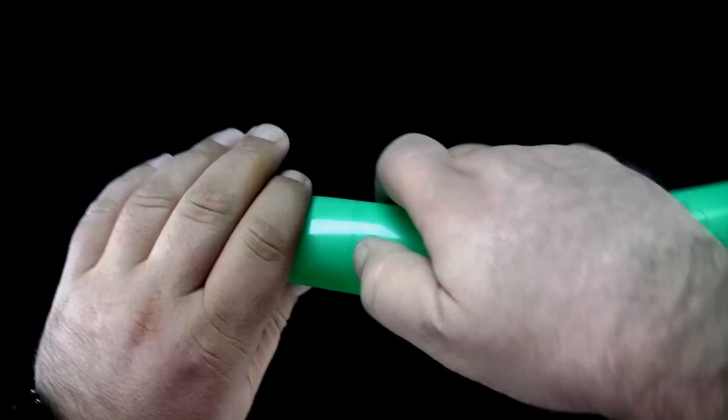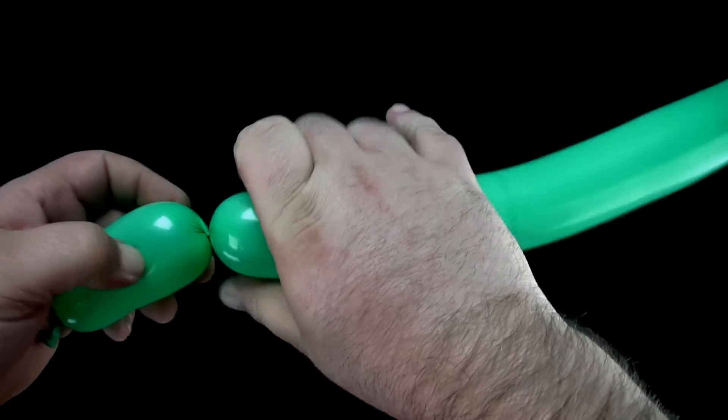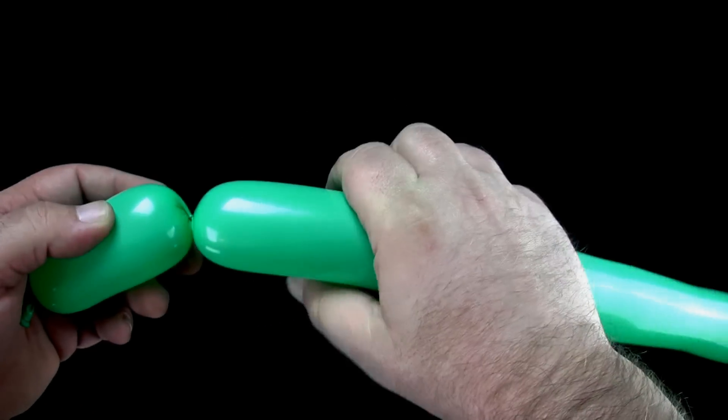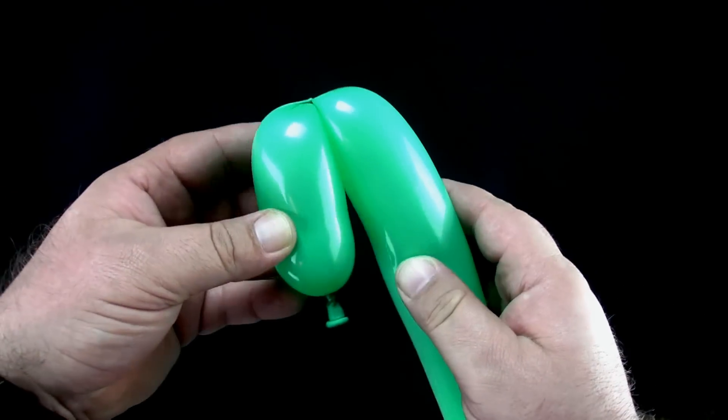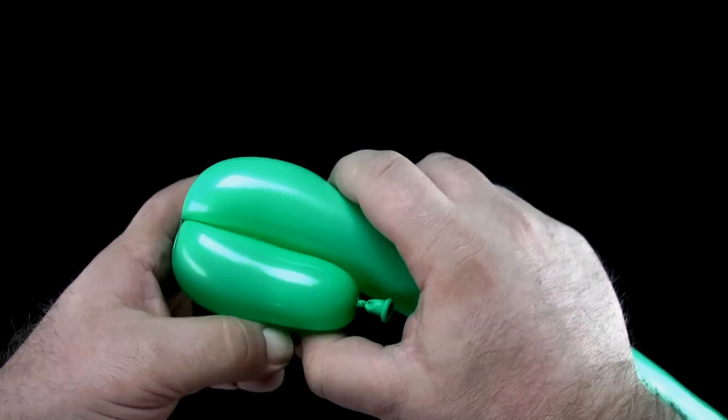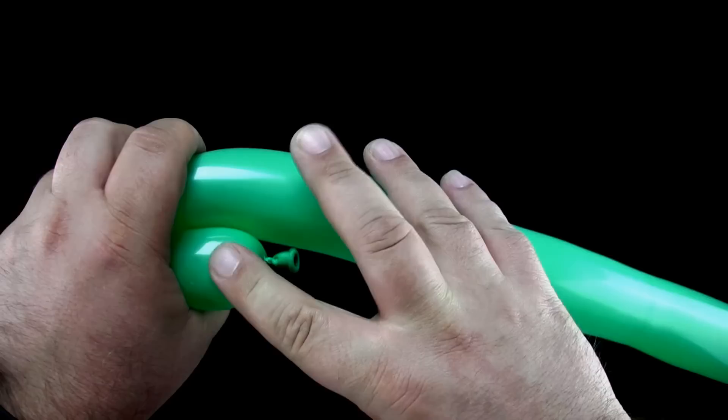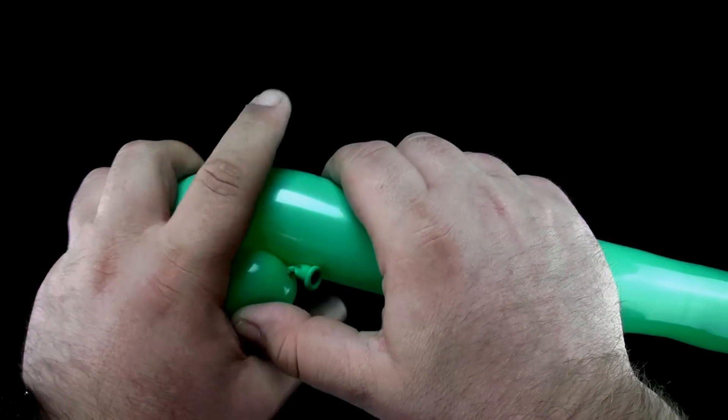Begin with a three finger bubble. Fold the balloon along the bubble you twisted and, measuring off of it, twist the bubble slightly larger than the first bubble.